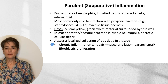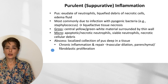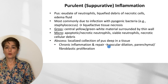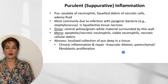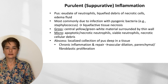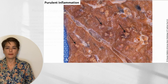If an abscess becomes chronic, which many of them do, we can get chronic inflammation and repair with vascular dilation and parenchymal fibroblastic proliferation. Let's take a look first at just a regular instance of purulent inflammation.